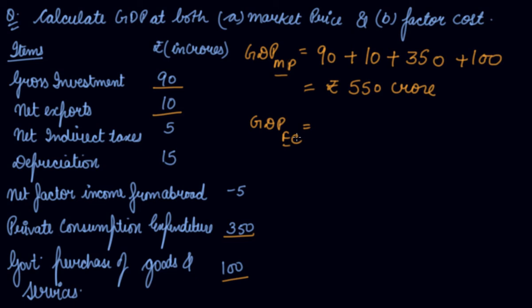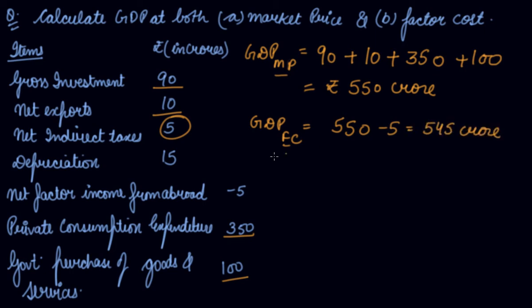Now to calculate GDP at factor cost from market price, you subtract net indirect taxes. Here the net indirect taxes are 5, so GDP at FC = 550 − 5 = rupees 545 crore.